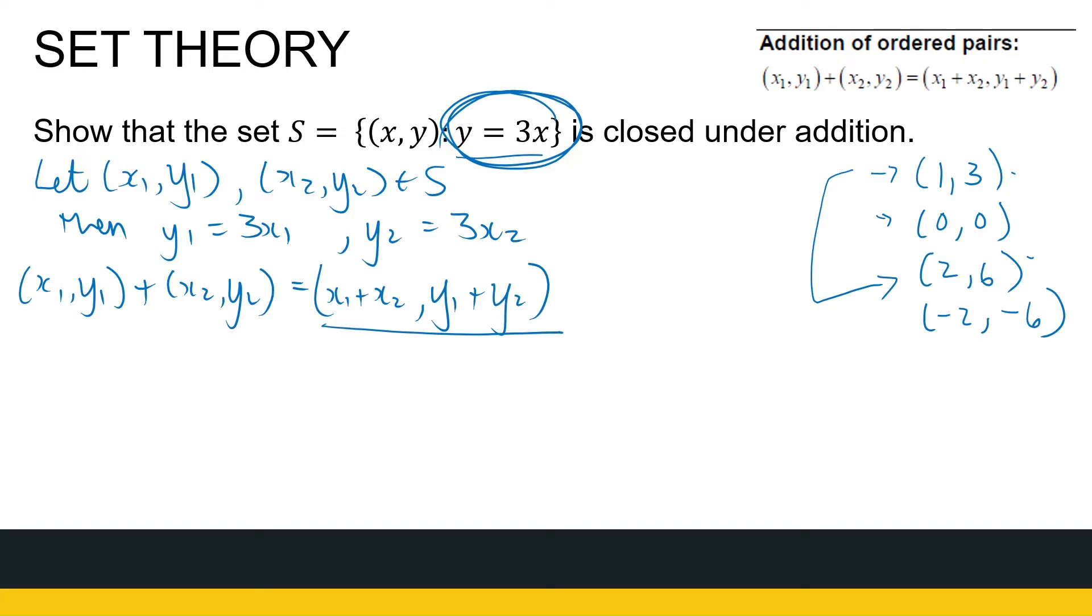What we need to now show is that this new set that we've got here is again in S, so it meets this requirement. So let us see what is this second entry, y1 plus y2. I've got some information about that. That is 3x1 plus 3x2.